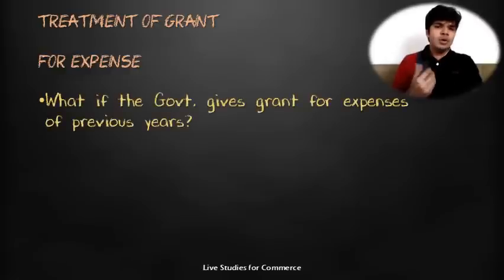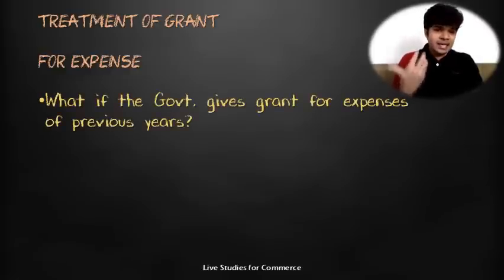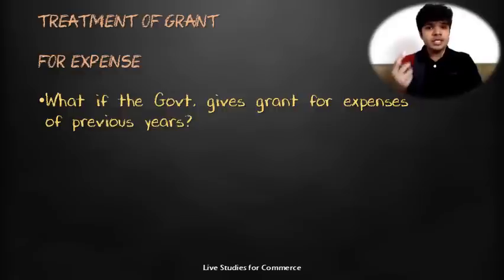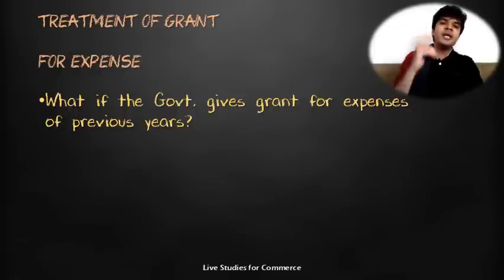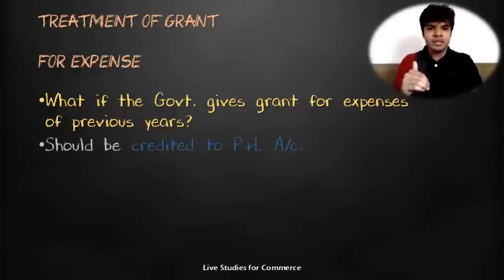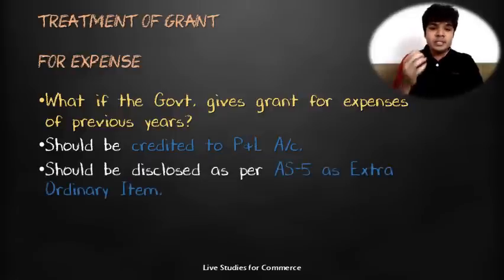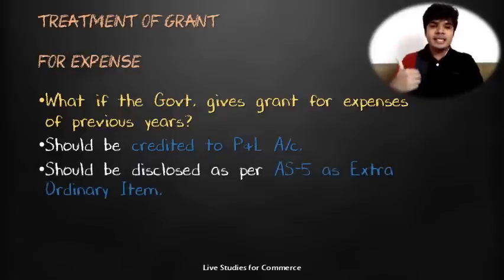If a government grant is received for expenses already incurred in previous years — not the current or future year — then that grant should be credited to the profit and loss account and disclosed as an extraordinary item as per Accounting Standard 5.